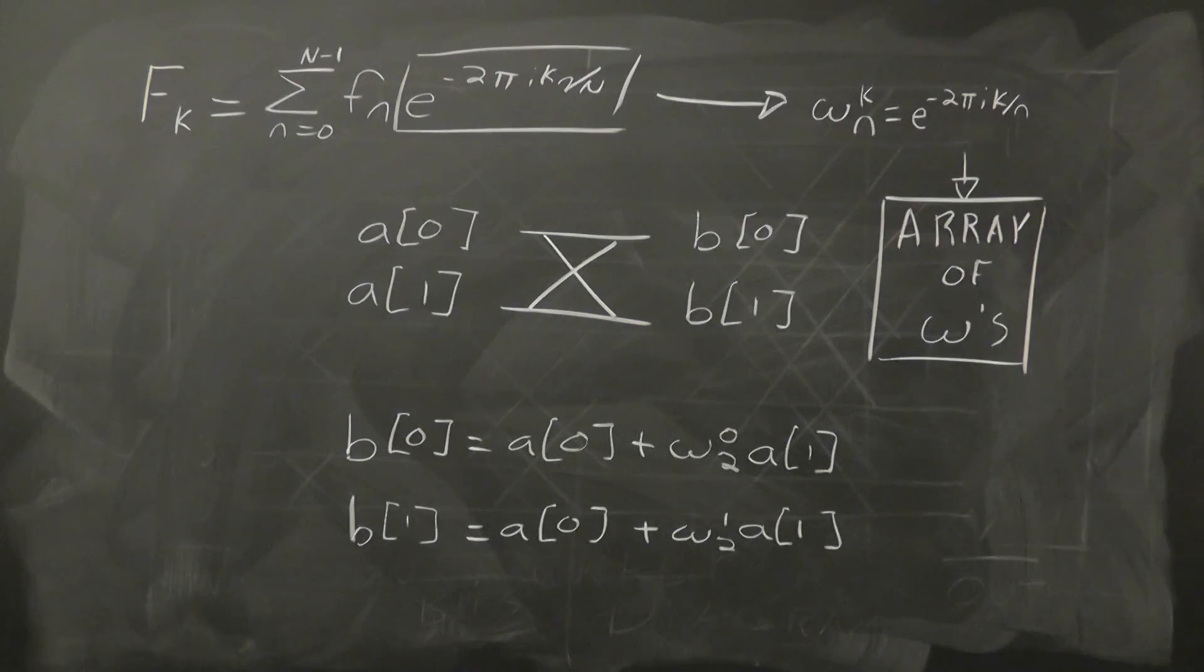Like I said, we're going to need an array of these omega values, but it turns out that the second half of this array will always be equal to the negative of the first half. So we can save RAM by simply using half of the array of omega values. In this case, we simply need to change ω₁ to negative ω₀.